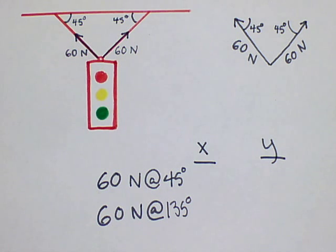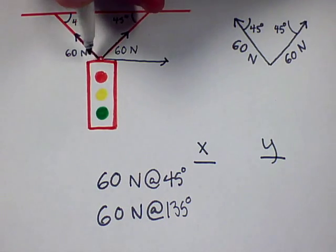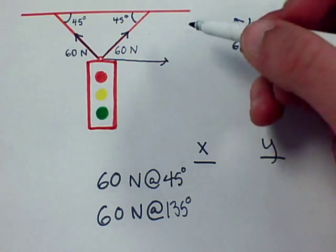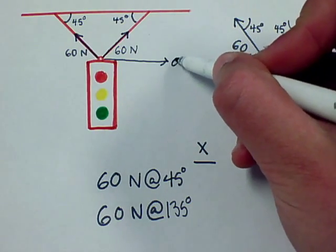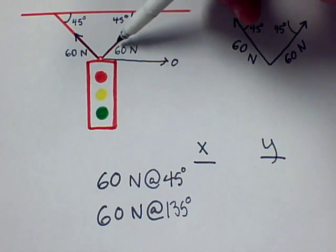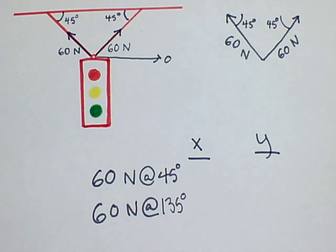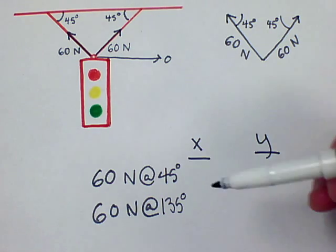And the second force is going to be at 135 degrees and not 45 degrees because it is in the second quadrant, 45 degrees to the left of 90 degrees. 90 degrees plus 45 degrees is 135 degrees. So if you have this as your x-axis, this is zero, that's going to be 45, and then that's going to be 135, that's 180.